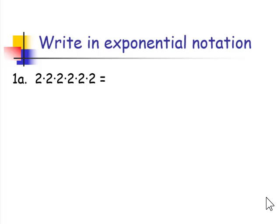When writing an expression in exponential notation, we have to count the number of times a number is being used as a factor. In this case, 2 is being used as a factor 6 times, so we write 2 to the 6th power.